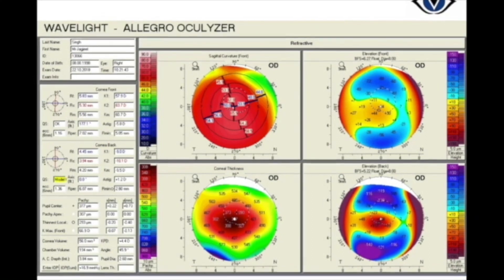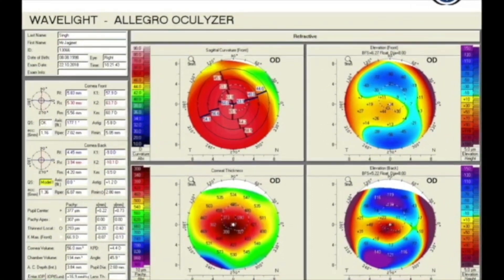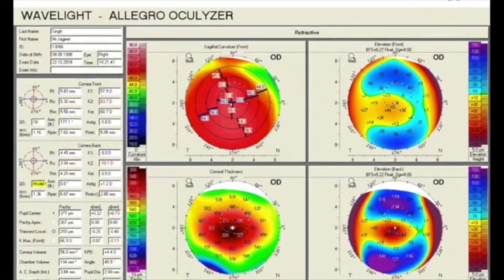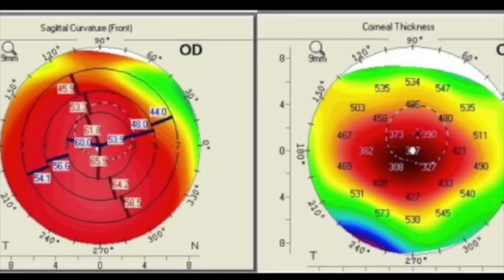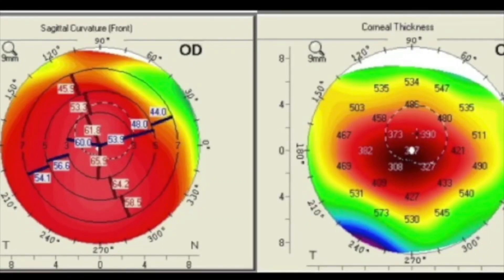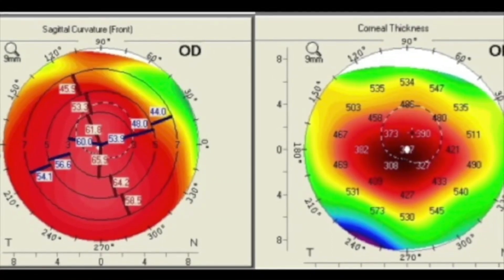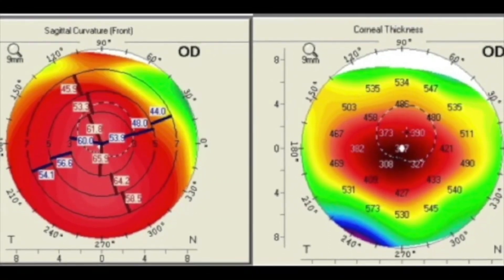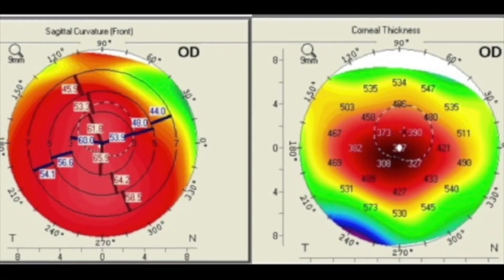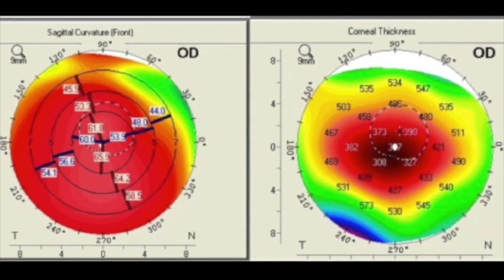Tomography image of the right eye showed features diagnostic of keratoconus. The cornea was steep with keratometry readings touching 65 diopters and pachymetry going below 300 microns.